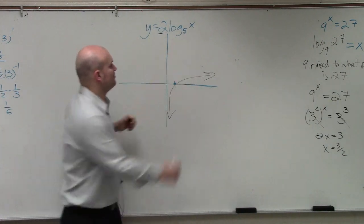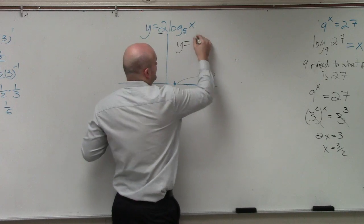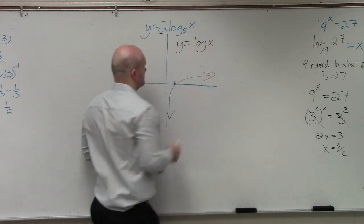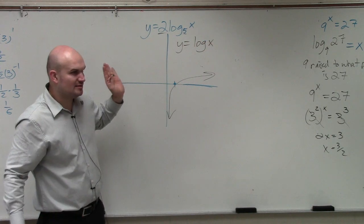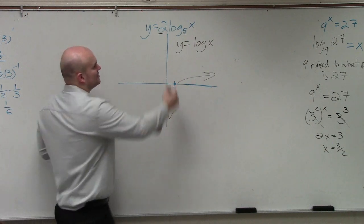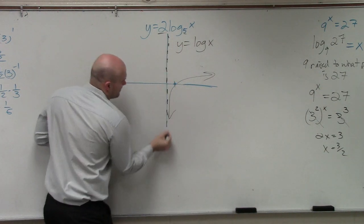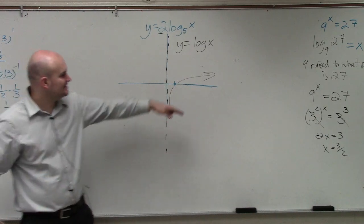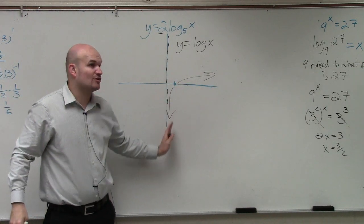But do you guys notice here's what the original parent graph would look like, y equals log of x? There's no transformations, right? So remember, this graph has that asymptote, meaning this graph approaches 0, does not cross 0.